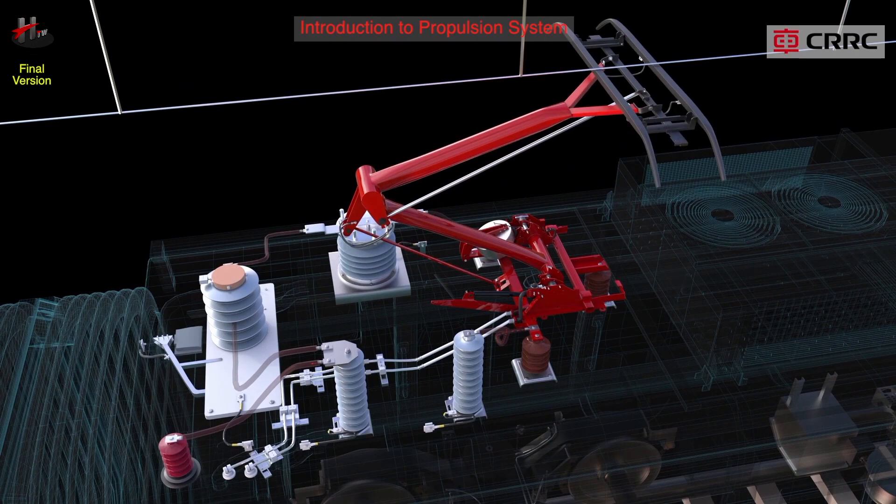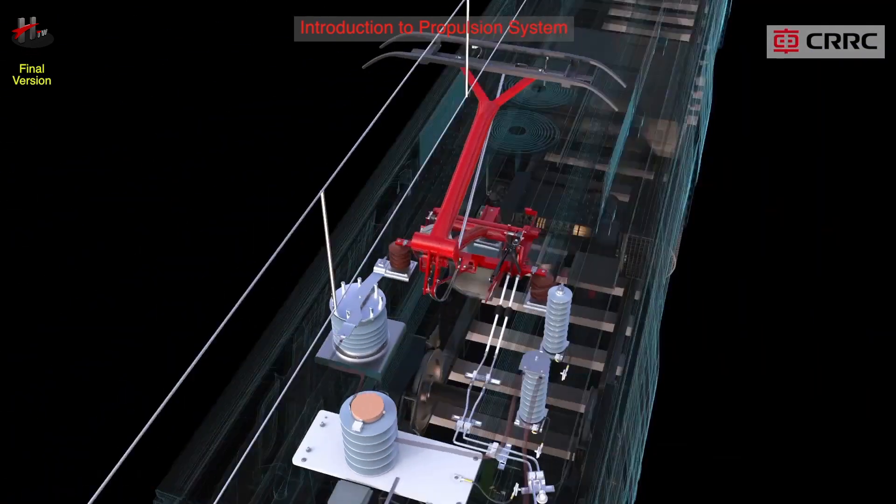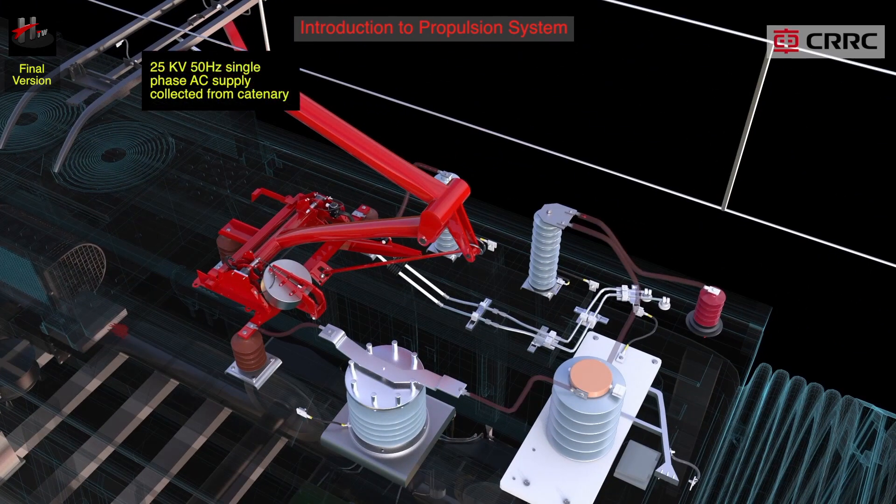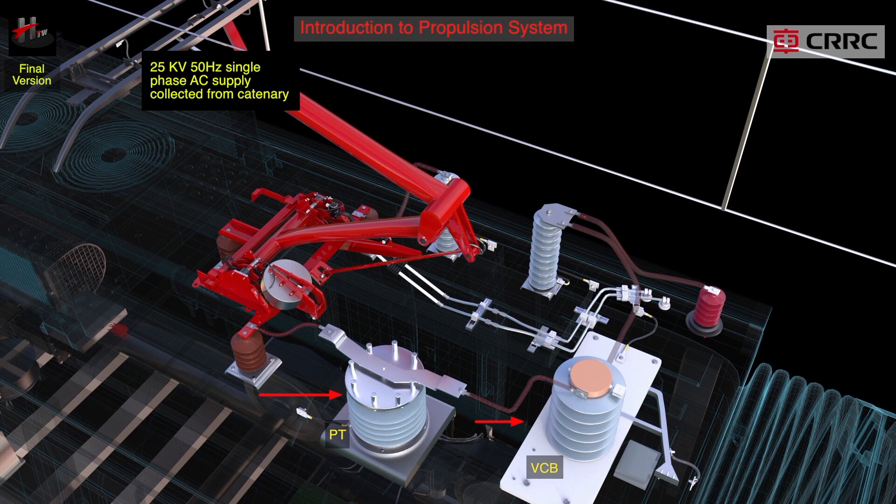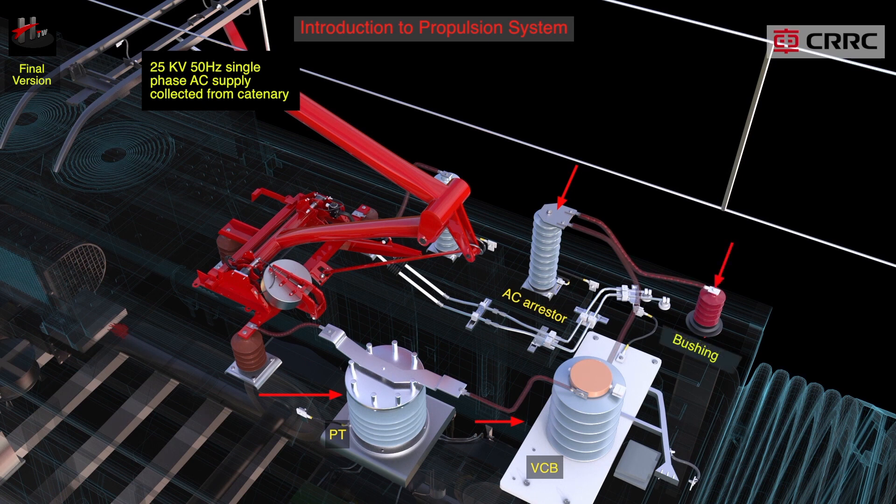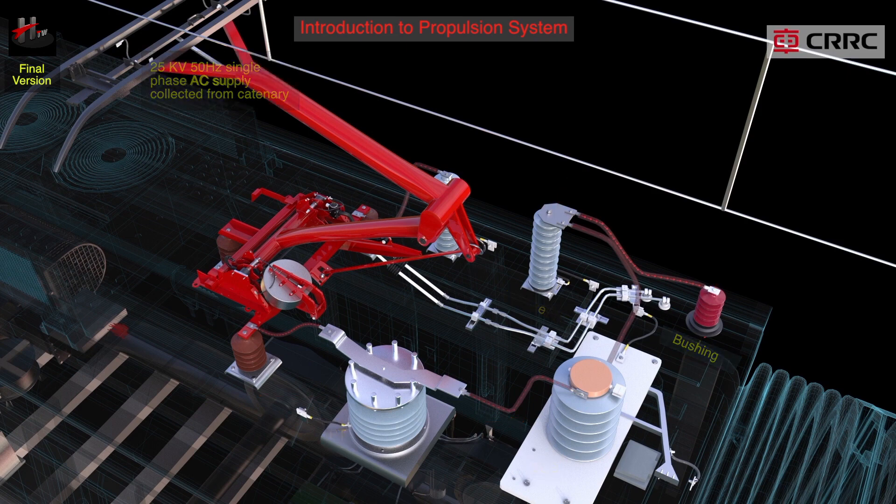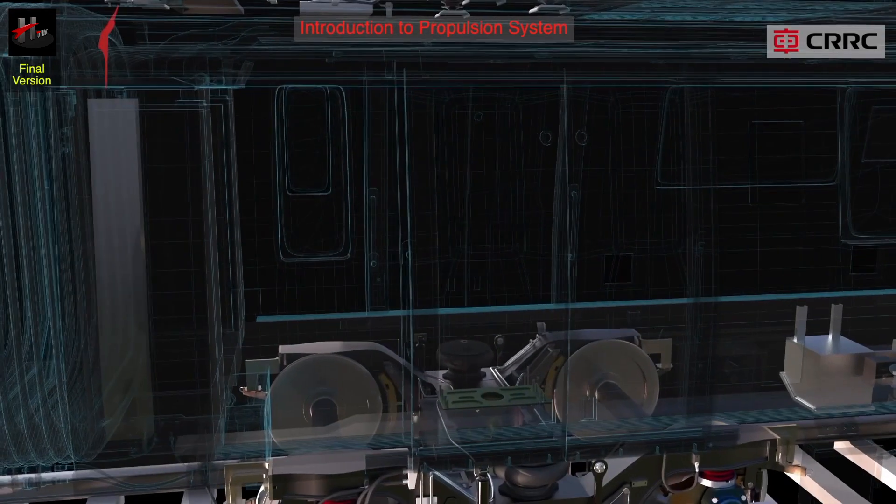25 kV single phase AC supply is collected by the pantograph from the catenary. The catenary supply through the potential transformer, the VCB, the AC arrester, and bushing is fed into the main transformer.